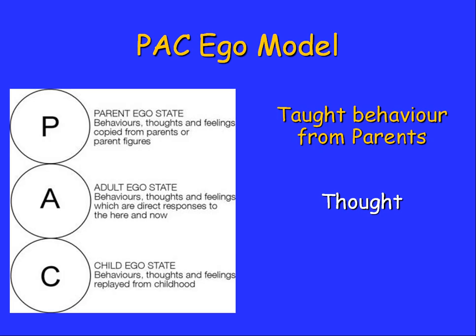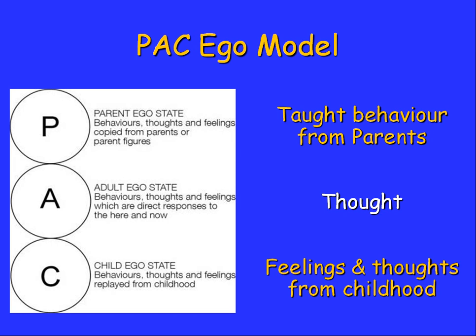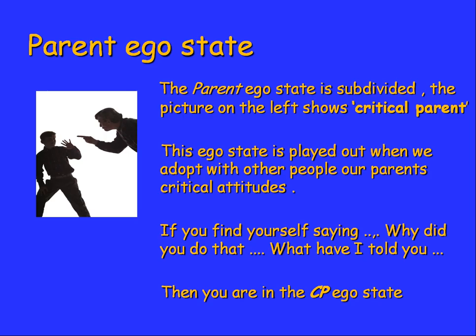The child ego state covers behaviours, thoughts, and feelings replayed from childhood. Looking at the parent ego state in more detail, it's subdivided. The critical parent ego state is played out when we adopt our parents' critical attitudes with other people. If you find yourself saying things like 'why did you do that?', 'what have I told you?', or 'don't throw that knife around, you'll have someone's eye out' — almost certainly you'll be replaying attitudes your parents used or taught you.